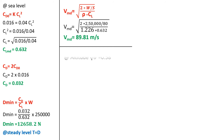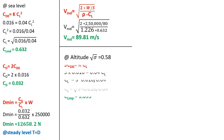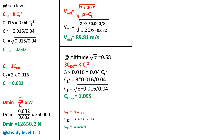Now let us consider the aircraft flying at altitude under minimum power condition. The condition is 3·CD naught equals K·CL square. Substituting the known values, the coefficient of lift at minimum power condition is found to be 1.095. At minimum power condition, the coefficient of drag equals 4 times CD naught. Since CD naught is 0.016, multiplying by 4 gives a coefficient of drag of 0.064.